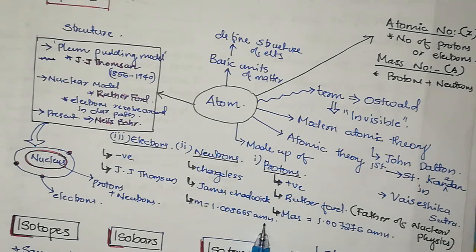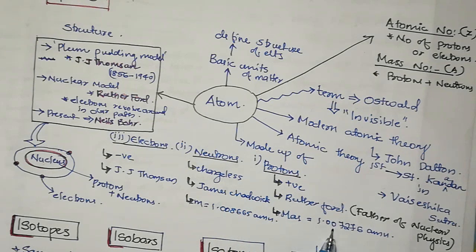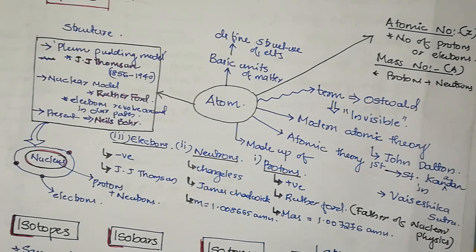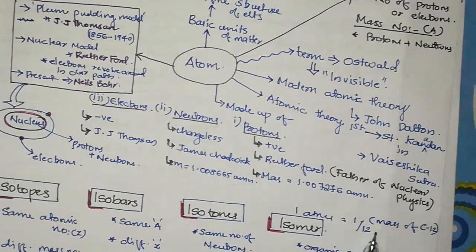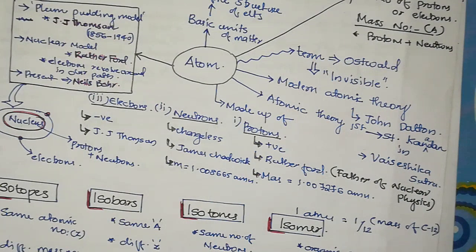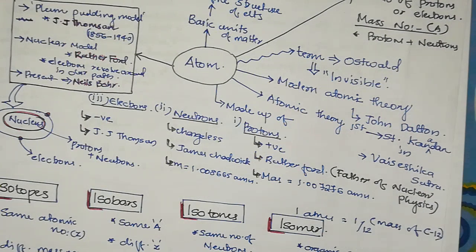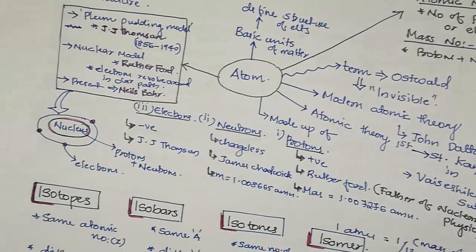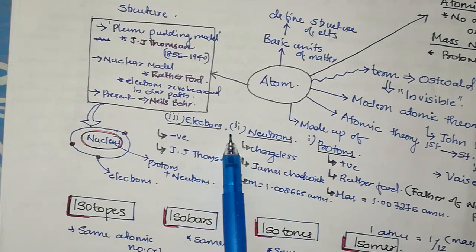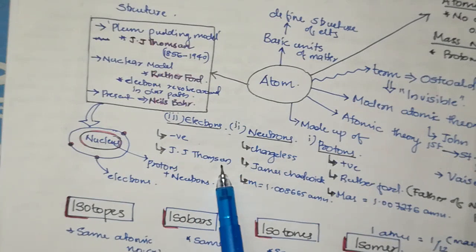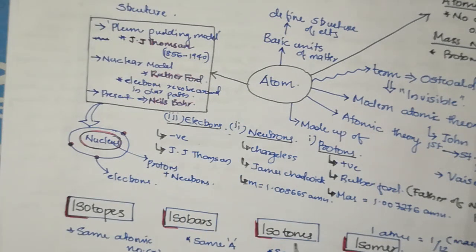The mass of a neutron is 1.008665 amu, where amu stands for atomic mass unit. Protons are 1.007276 atomic mass units. One atomic mass unit is 1/12 of the mass of carbon-12. Electrons are negatively charged particles, discovered by J.J. Thomson.